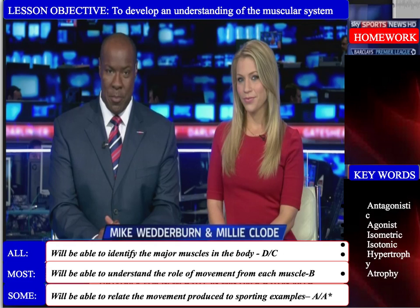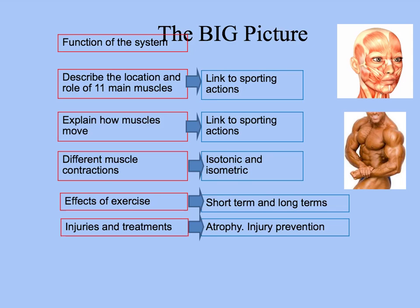Hello and welcome to another GCSE podcast, this one being on the muscular system. In your exam, you need to be able to identify the 11 major muscles in the human body. You need to understand the role of movement produced from each muscle and also relate these to sports examples. The primary purpose of our muscular system is to provide us with movement.